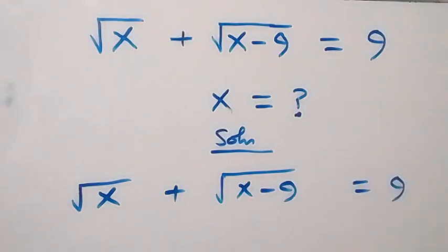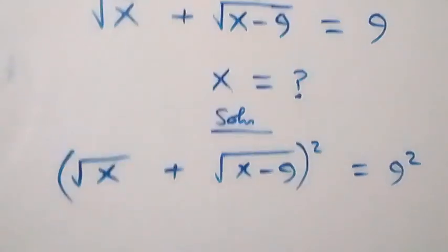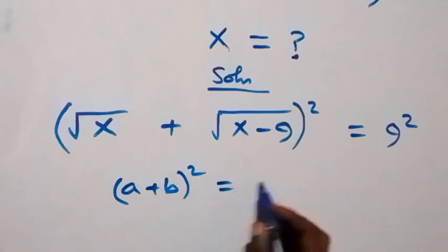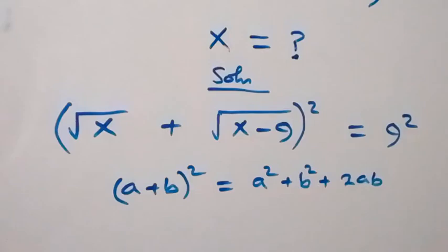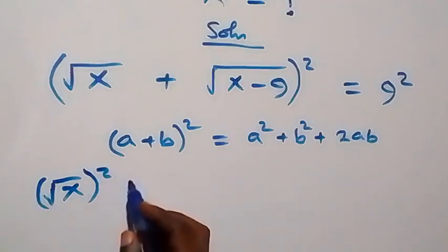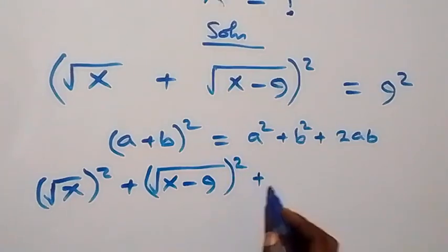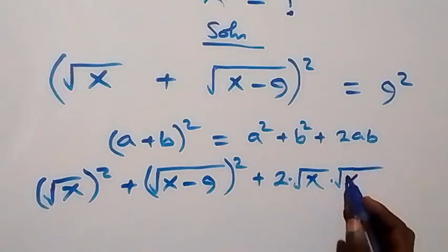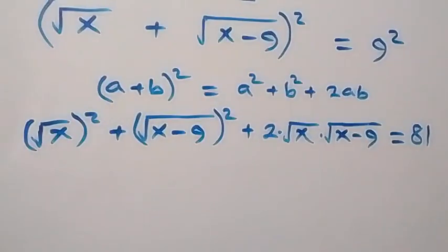From here, we can take the square on both sides directly. We square this side and also we square this side, following the expansion of (a + b) squared, which is the same as a squared plus b squared plus 2ab. This becomes root x squared plus root of (x minus 9) squared, then plus 2 times root x times root of (x minus 9), equals to 9 squared, which is 81.